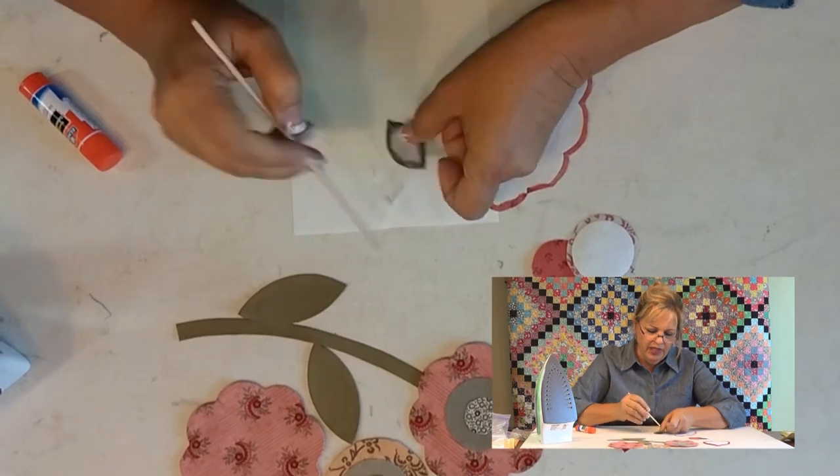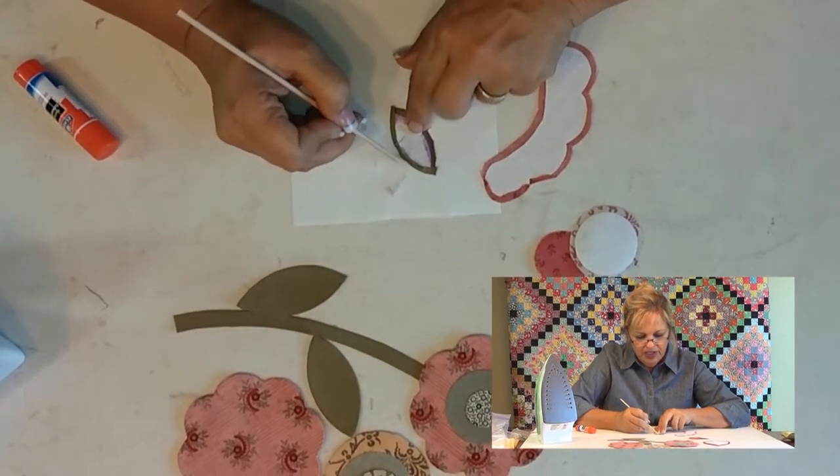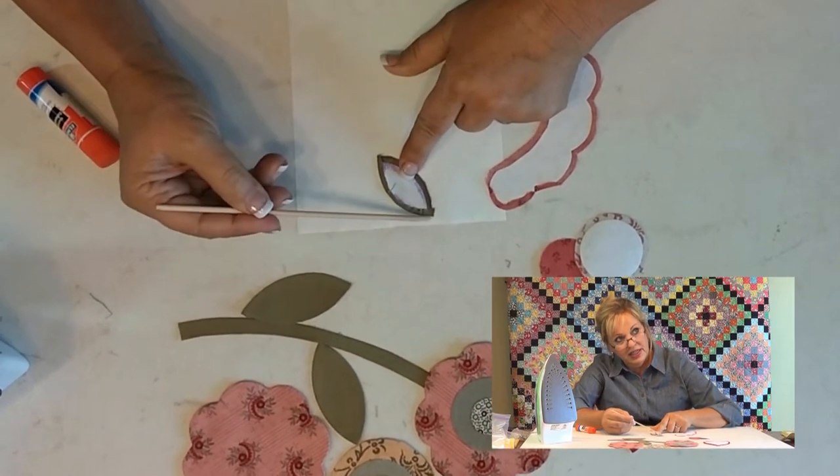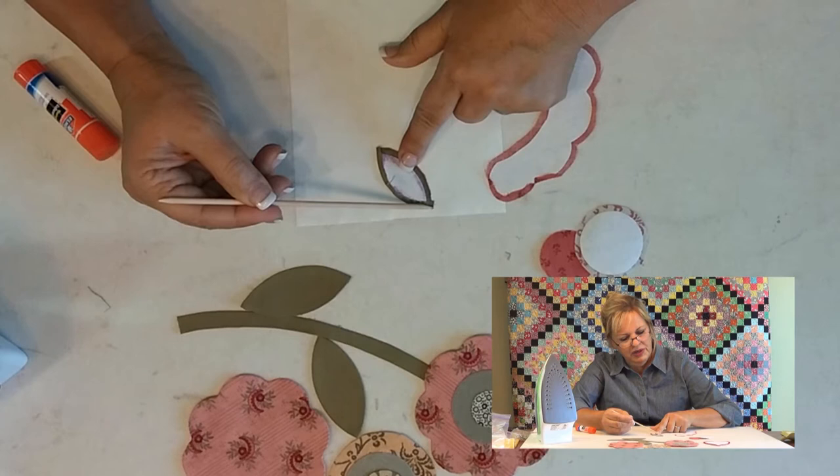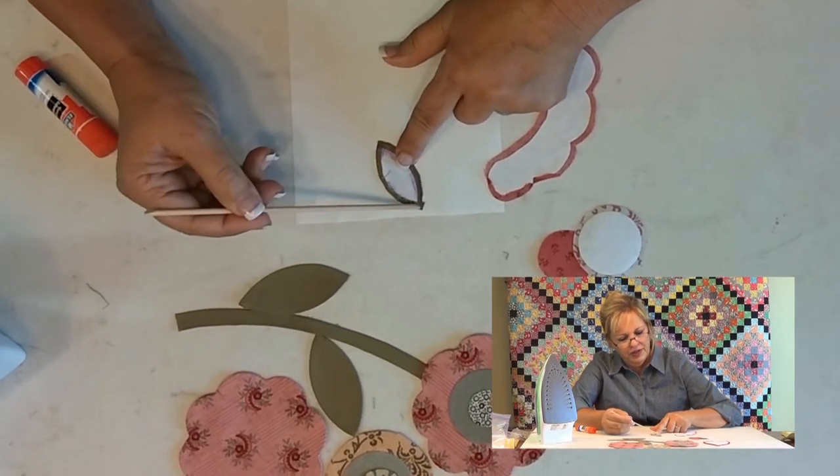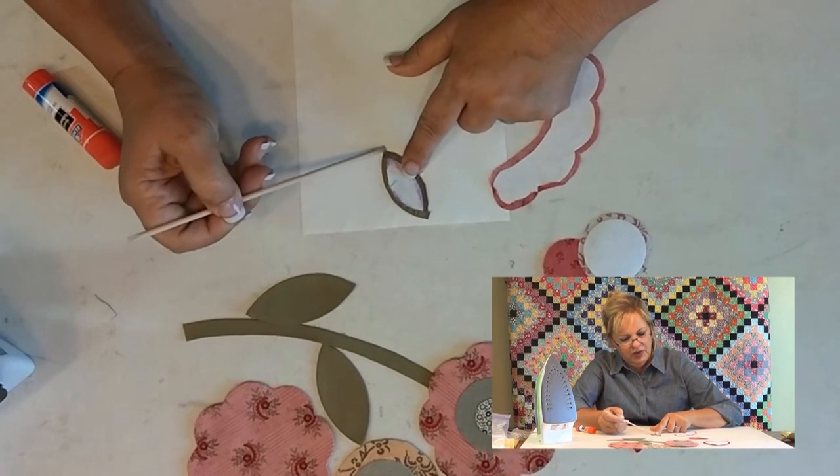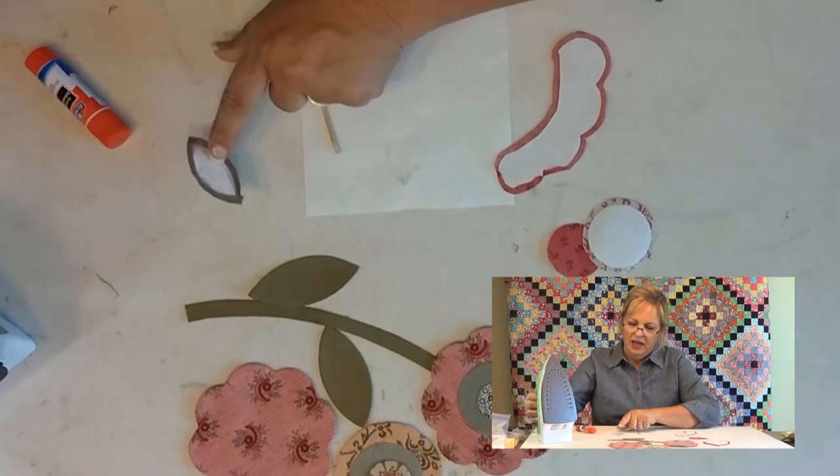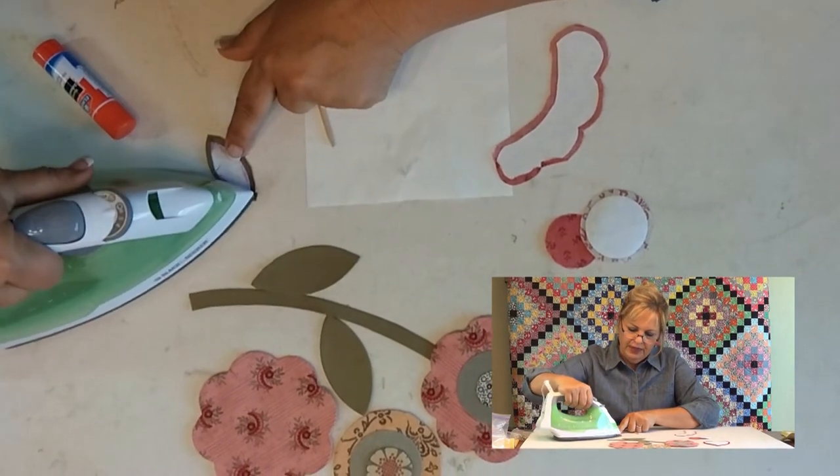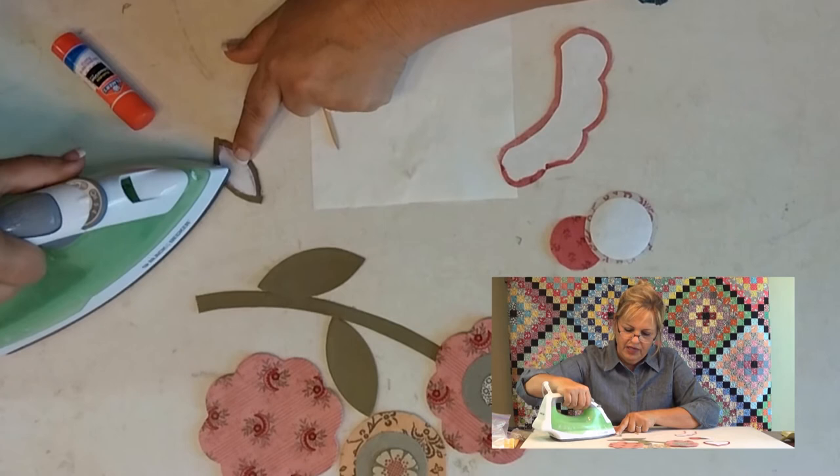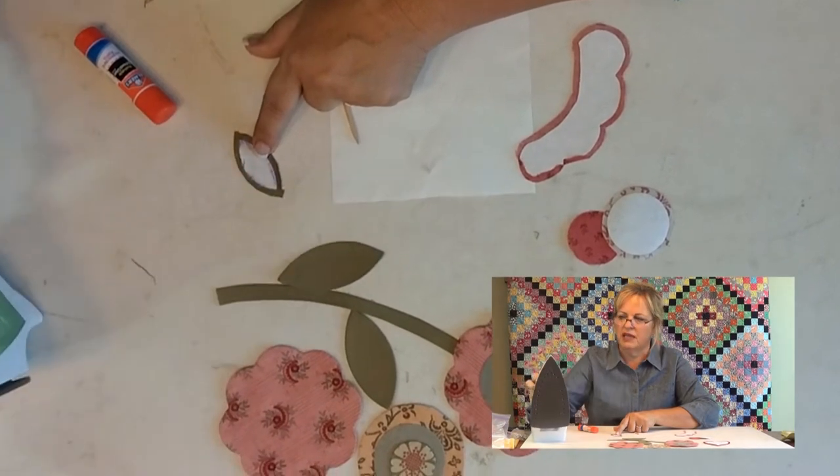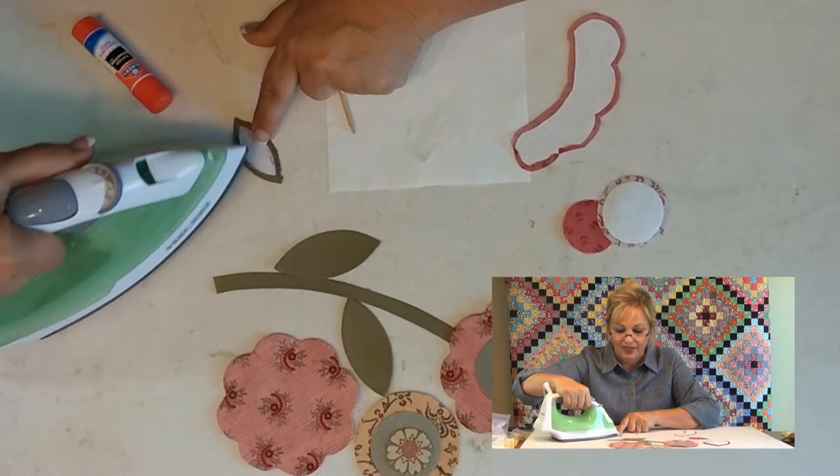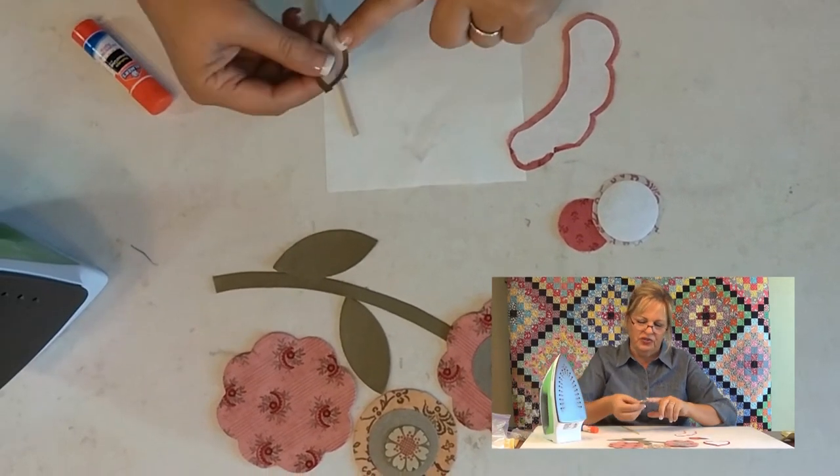But right now we're going over a hill and so this space right here we're actually easing in this fullness. And so you can do that with the stick. But what I want you to notice is it's really important that that seam allowance is turned over all the way through. It doesn't gradually get smaller. That seam allowance is the same size here as it is through the rest of it. And then I'm going to bring the iron over and I'm going to heat set this down. Now my iron has got some steam coming out of it but I don't recommend the steam for this part because steam is wet and we want this glue stick to dry.